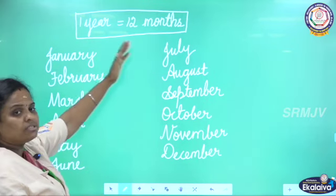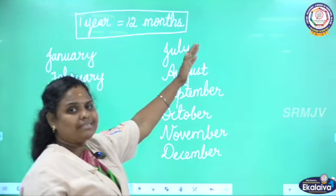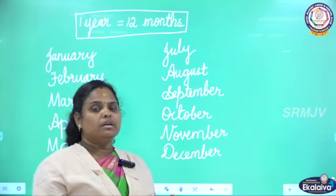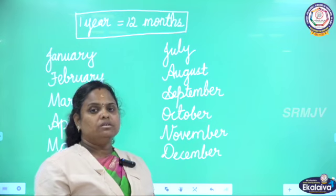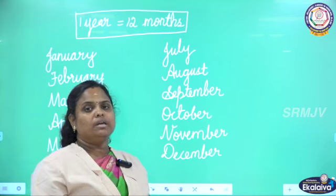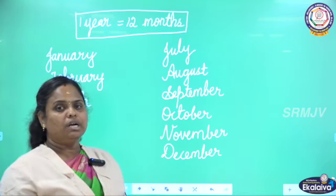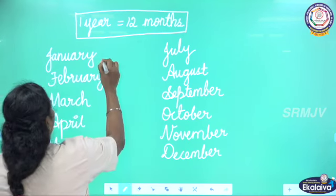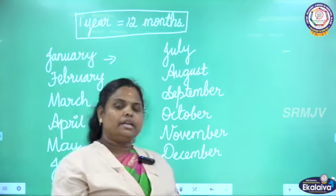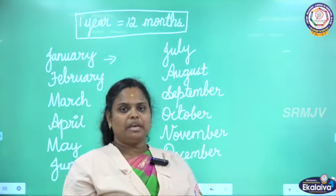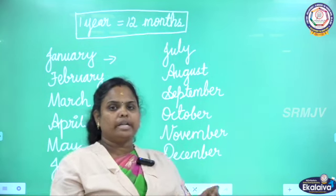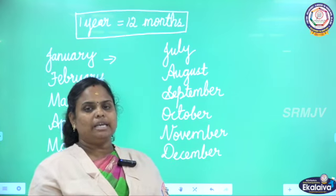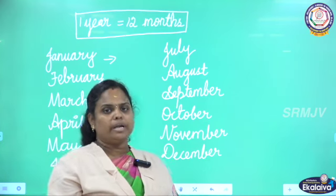1 year has 12 months: January, February, March, April, May, June, July, August, September, October, November, and December. In one month, there are 30 or 31 days, but February alone has 28 or 29 days. In an ordinary year, February has 28 days; in a leap year, February has 29 days. A leap year comes once every 4 years — if you divide the year by 4 and get remainder 0, it is a leap year.